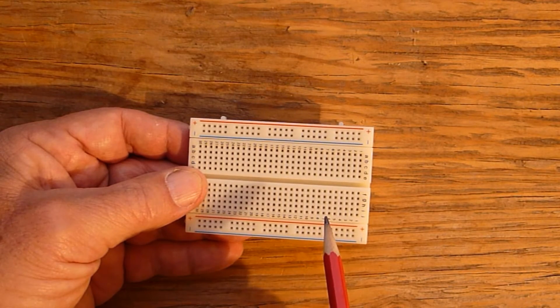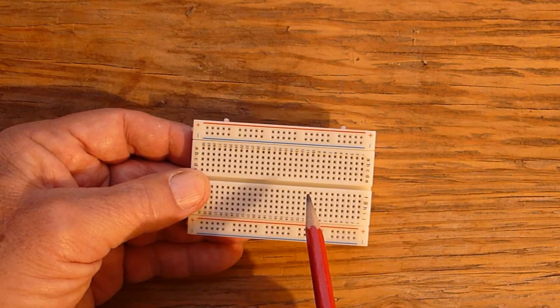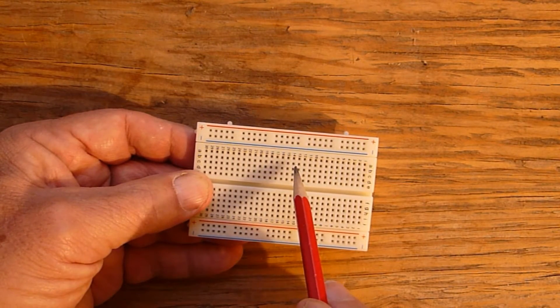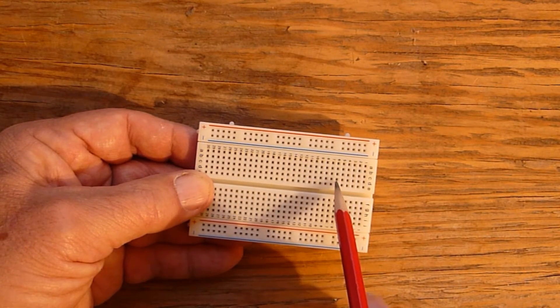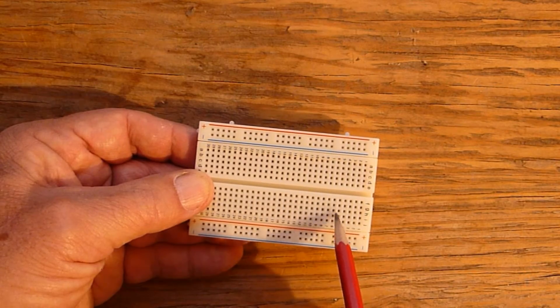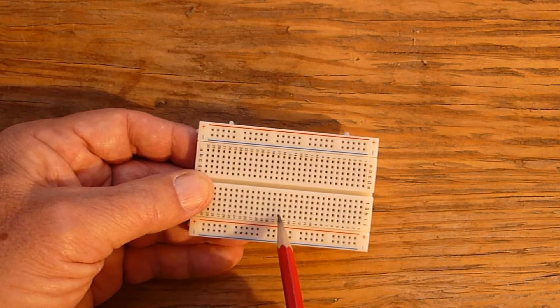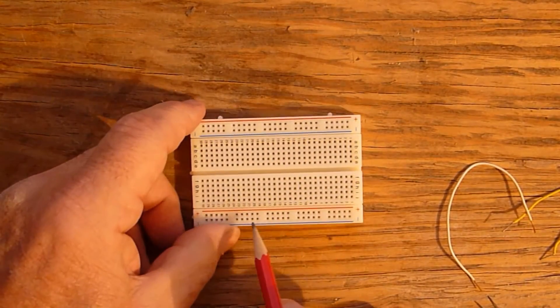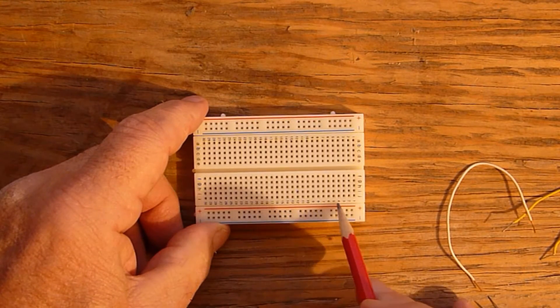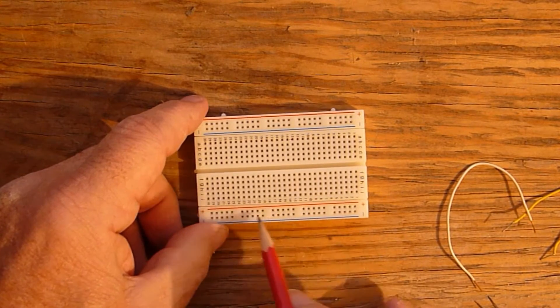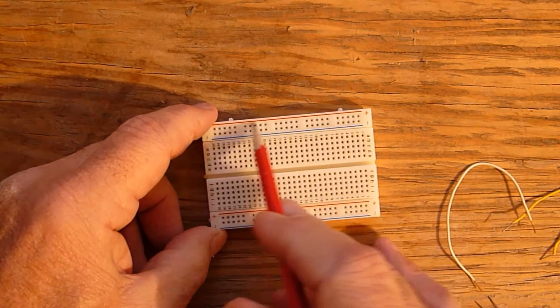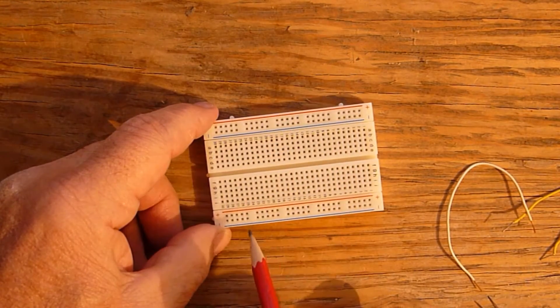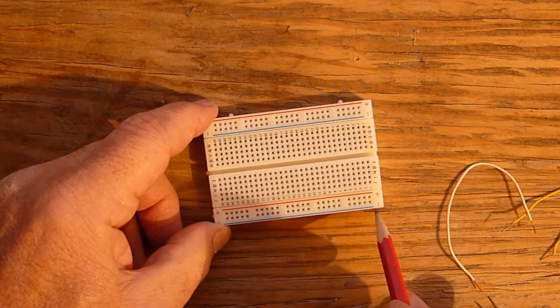Notice that these boards are made so it is easy to figure out which holes are connected electrically. These numbered columns of five holes each are connected together. With this board, these 25 holes in these bottom rows are connected together as are the 25 holes in these top rows. These long rows are often used to connect the board to the power source.